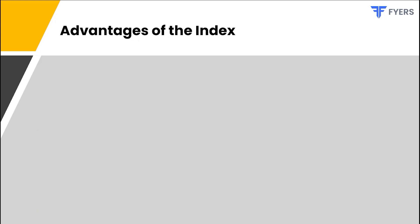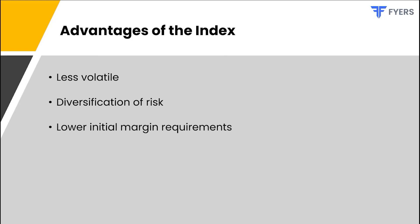Compared to individual crude oil and natural gas futures contracts, the energy index is less volatile as it consists of two commodities instead of one, so risk gets diversified. The index will offer some cushion in case of an adverse move in one commodity. The total contract value of a combined position in crude oil and natural gas futures is around ₹11 lakhs, whereas energy index futures is around ₹7.5 lakhs, resulting in a lower margin requirement. Additionally, if you have an underlying exposure in crude oil or natural gas futures, you can hedge that position by taking an offsetting position in energy index futures.